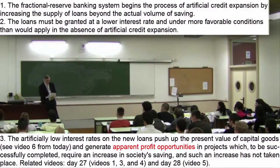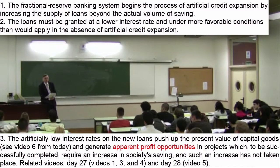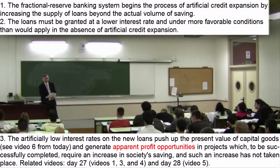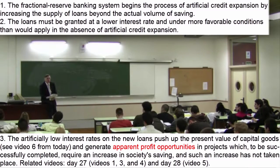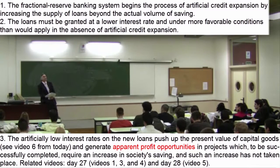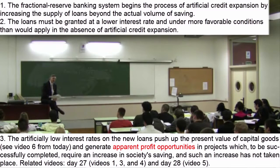Initially, artificial credit expansion unbacked by saving generates a flow of new loans, which produces effects very similar to those we have just considered in the case of saving. With that new capacity to acquire factors of production at lower interest rates and under easier loan conditions, entrepreneurs rush to invest because they believe in the profitability of projects they have had in their portfolios but have not yet launched for fear they would be unprofitable. Furthermore, when entrepreneurs are granted a loan, they do not know if it derives from a genuine increase in saving or merely from artificial credit expansion brought about by the banking system.